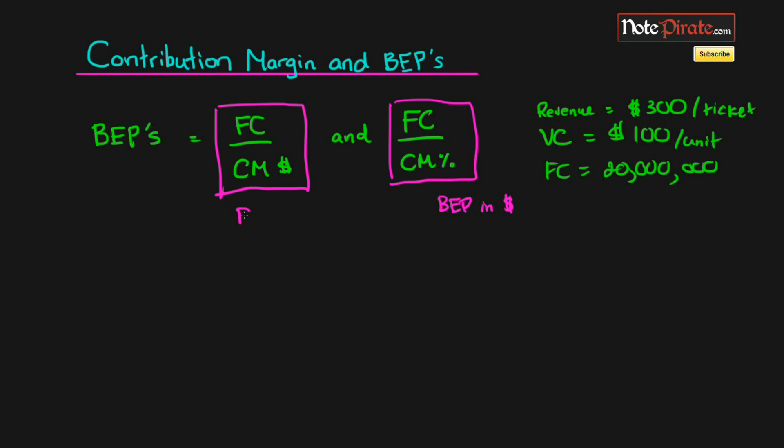The first one actually solved for the breakeven point in units. Because our ending figure was 20 million, divided by, I think it was 200. So we had, in total, 100,000 flights. So that was the amount in units to breakeven. But the amount in dollars to breakeven, we need the contribution margin ratio.